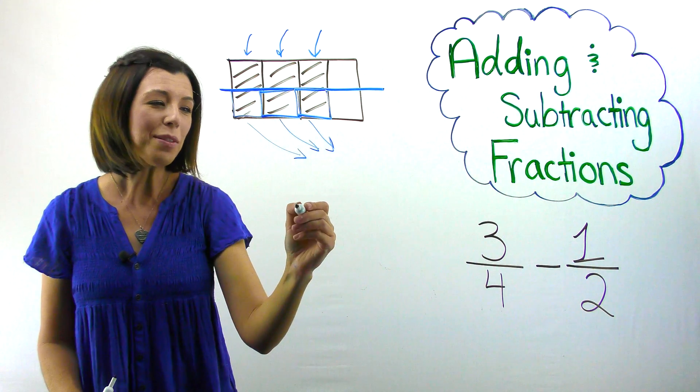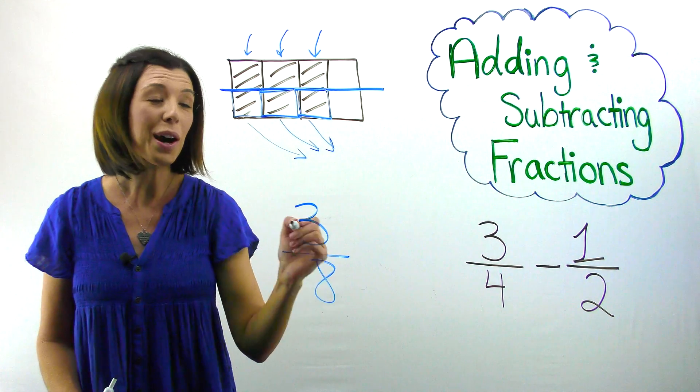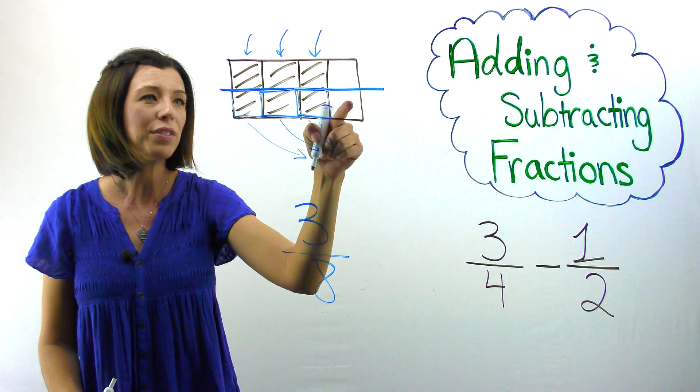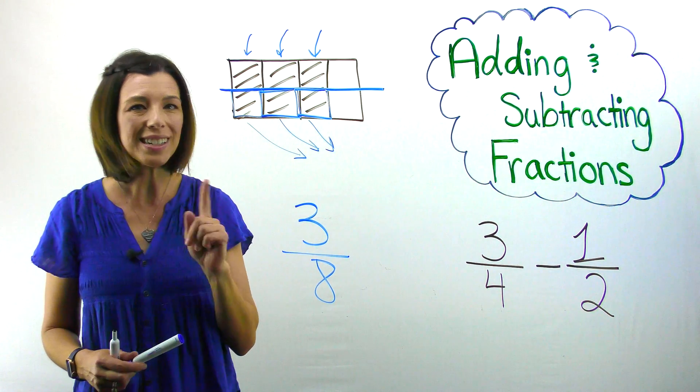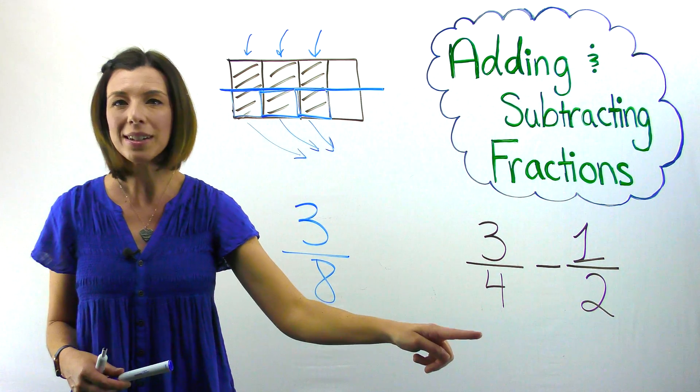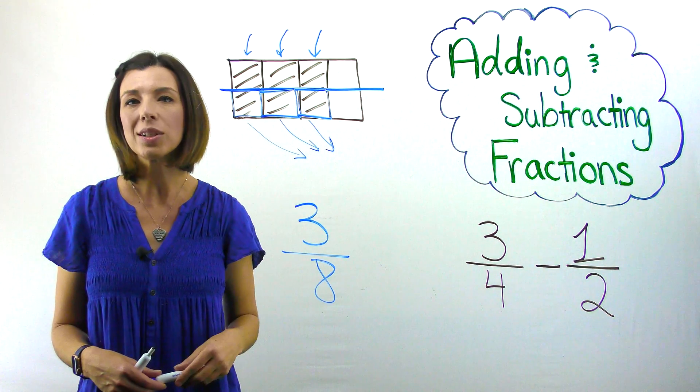Well, technically, that would be three copies of one-eighth. One, two, three, four, five, six, seven, eight. Three copies of one-eighth or three-eighths. You can see how this actually does not model three-fourths minus one-half.